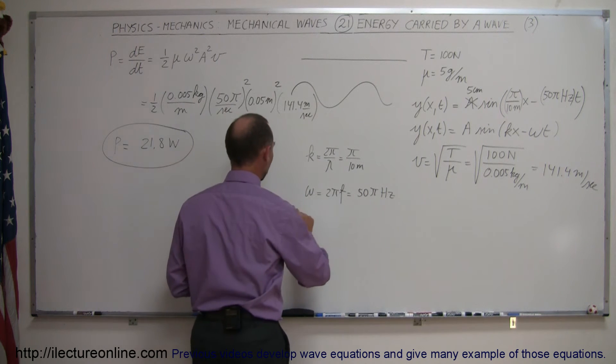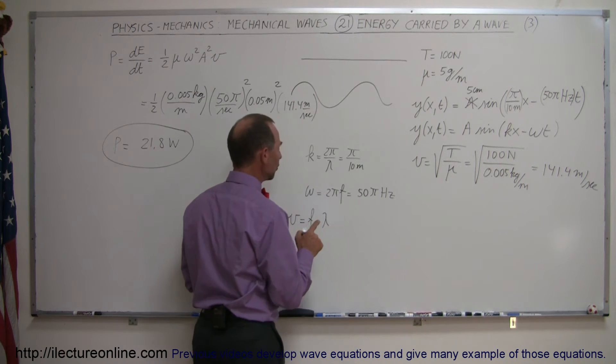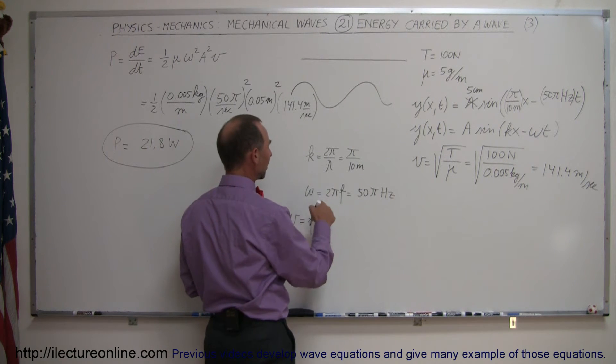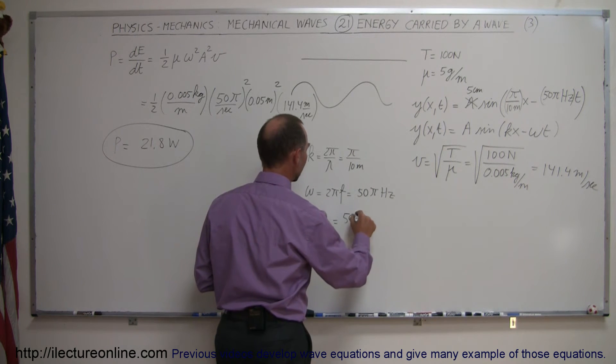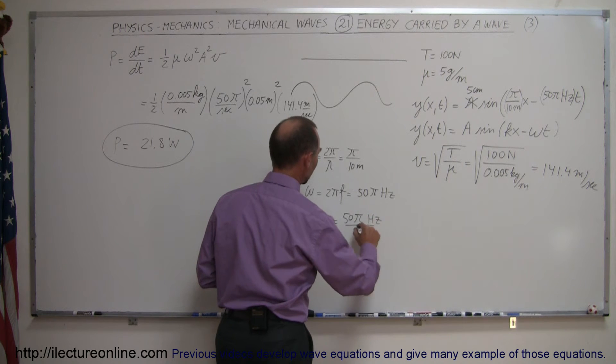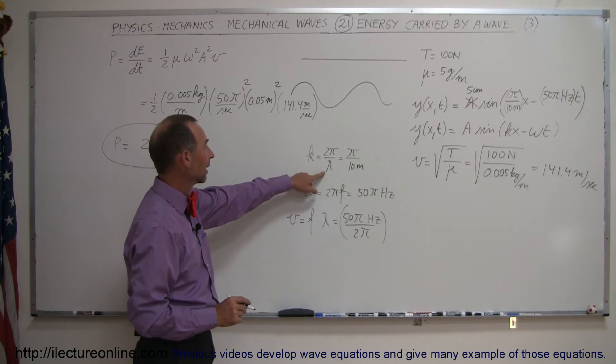Alright, so now since I know that my velocity is equal to frequency times wavelength, what I can do is to get the frequency, I take omega divided by pi, so that would be omega, which is this much, divided by 2 pi, so 50 pi hertz divided by 2 pi, is the value for omega, according to my equation.